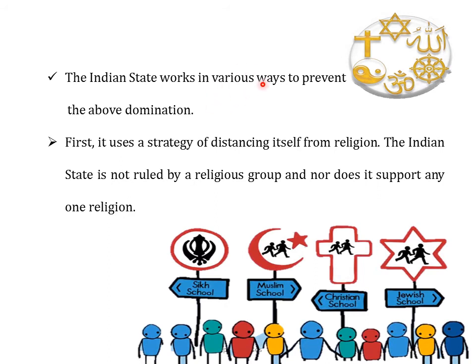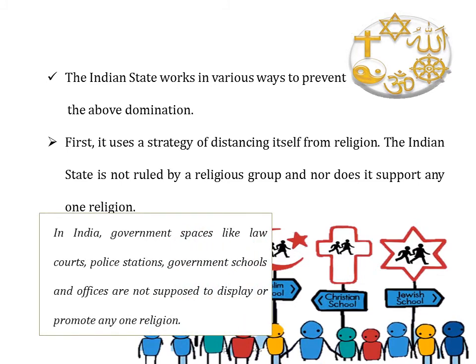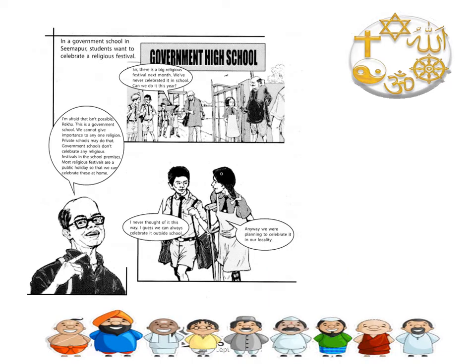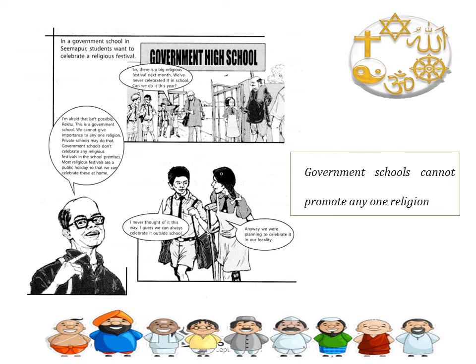The Indian state works in various ways to prevent this domination. The first strategy is distancing itself from religion — the Indian state is not ruled by a religious group nor does it support any religion. Government spaces like law courts, police stations, government schools, and offices are not supposed to display or promote any one religion. For example, in a government school, if students want to celebrate a religious festival, the teacher would say it is not possible because the school cannot give importance to one religion. Government schools cannot promote any one religion in their morning prayers or through religious celebrations, though this rule does not apply to private schools.